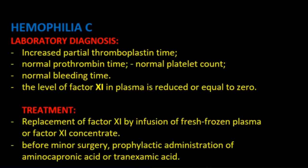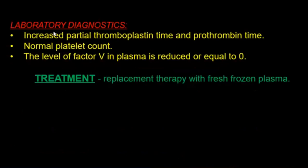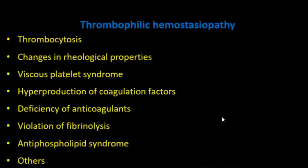Before minor surgery, prophylaxis by administration of aminocaproic acid or tranexamic acid is used. Laboratory diagnosis shows increased partial thromboplastin time and prothrombin time, normal platelet count. Factor V level in plasma is reduced or equal to zero. Treatment: replacement therapy with frozen plasma.